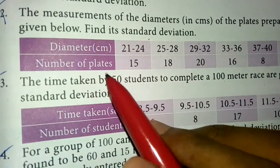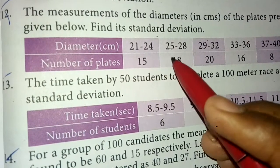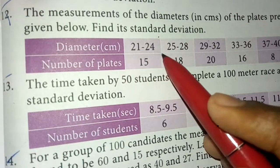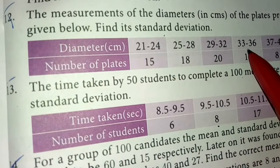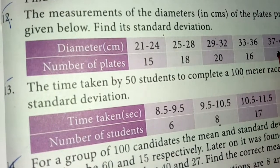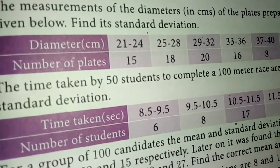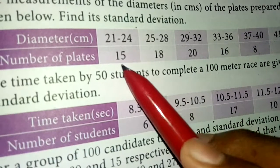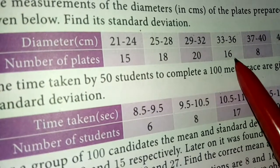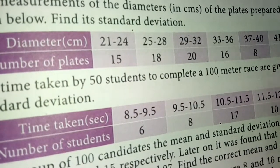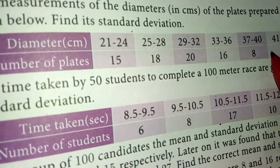Diameter values are: 24, 21 to 24, 28, 29 to 32, 37, 43, 44. The frequency values are: 15, 18, 20, 16, 8, 7. Now we are going to take the first item.